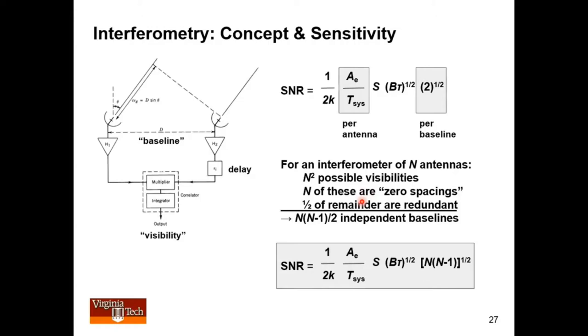But n of those are the antenna correlated with itself. You get no additional information from that. And then half of the remainder are the same baseline, just in different directions. No new information there. So we say we've got n times n-1 divided by two independent baselines.